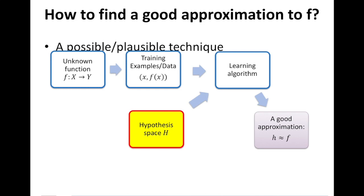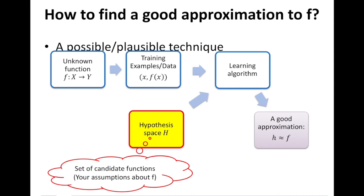But can it look at all possible functions? Is it even possible to do that? Or do you need a space in which the algorithm should focus on to find your h that's a good approximation to f? So hypothesis spaces come in handy where you tell the algorithm to look at a set of candidate functions or your assumptions about f that is helpful in directing, in guiding the algorithm to find the right approximation h.